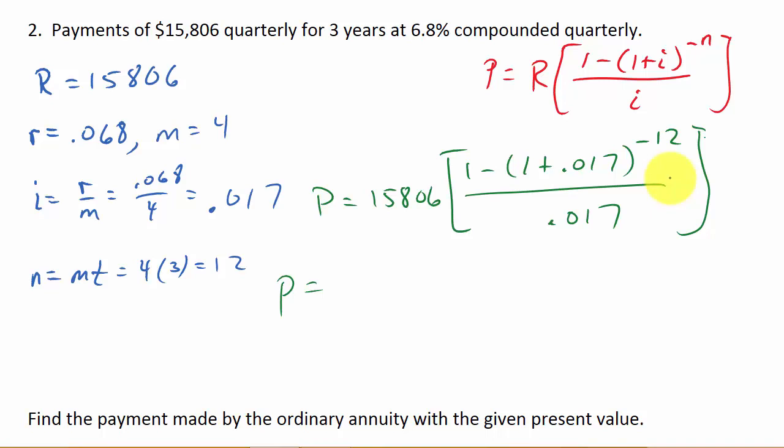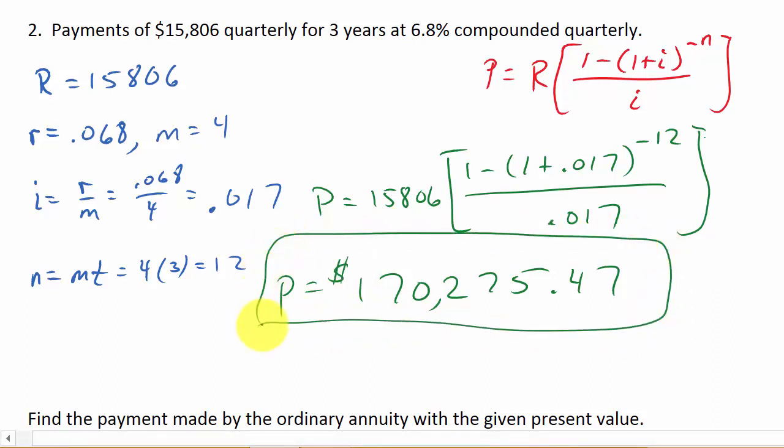And then times 15,806. And so that gives us 170,275.47. So that's $170,275.47. That would be your answer.